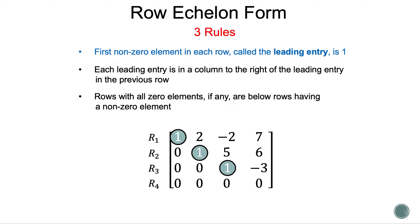Well, we will go over that in a bit. Our last row, row 4, doesn't have any non-zero elements, so we don't have a leading entry. Now let's talk about Rule 2: each leading entry is in a column to the right of the leading entry in the previous row. This rule has two parts.